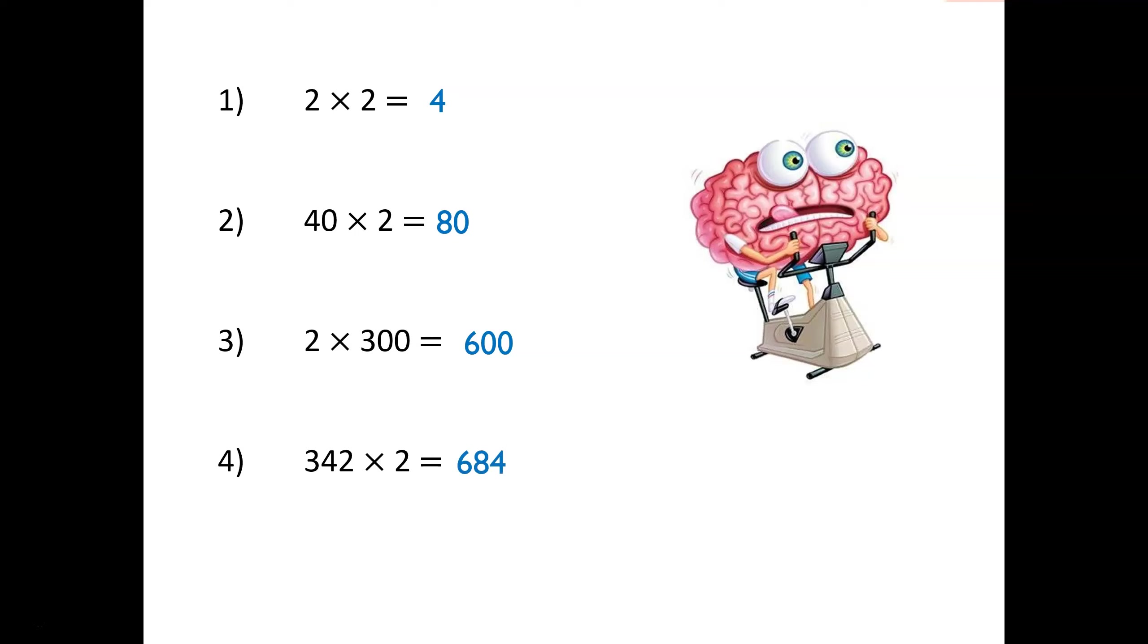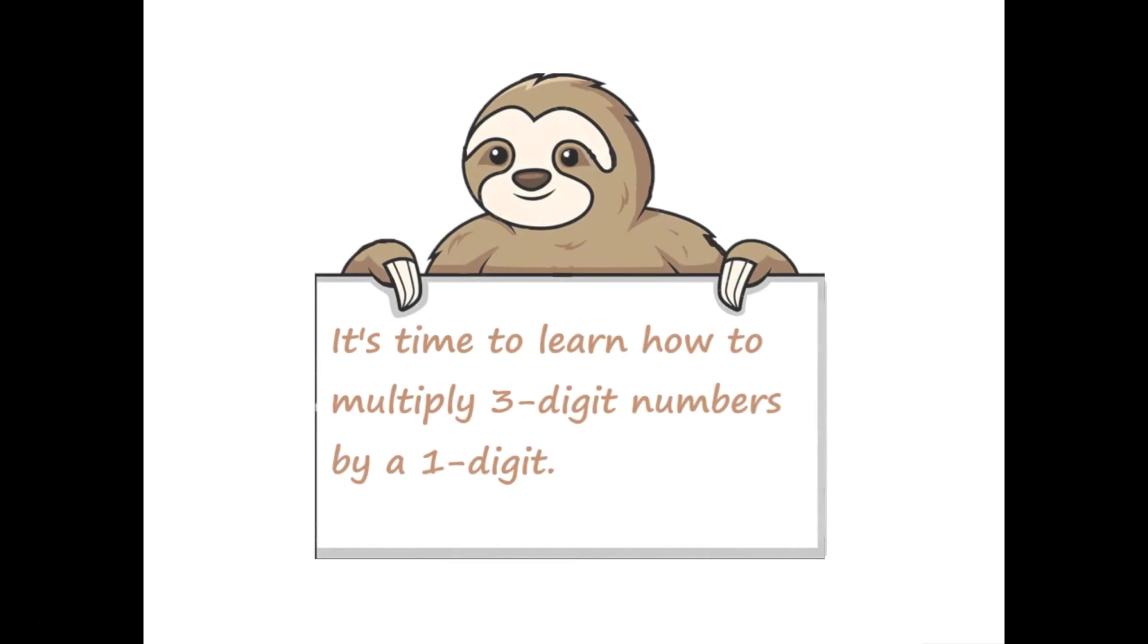Now that we are confident with partitioning numbers, we can use this method to multiply any number by a single digit. We have finished warming up our brains so we are ready to move on to today's lesson. In today's lesson we are learning to multiply 3 digits by 1 digit using short multiplication. In fact, once we know how to do this, we are going to be able to multiply any number by a single digit.